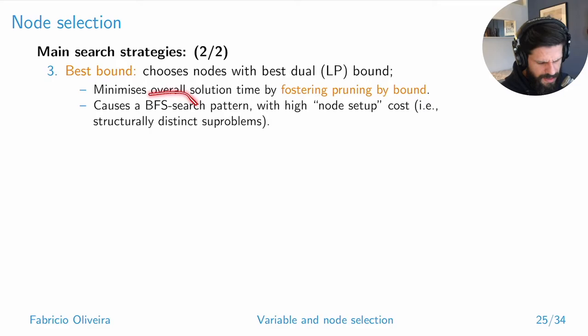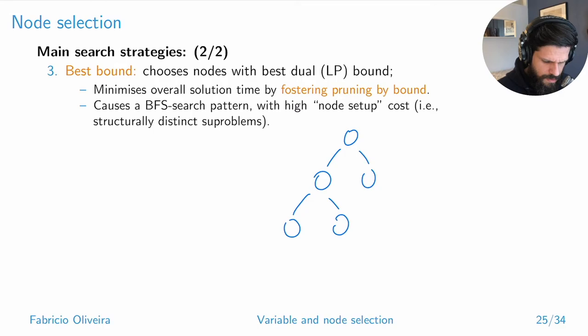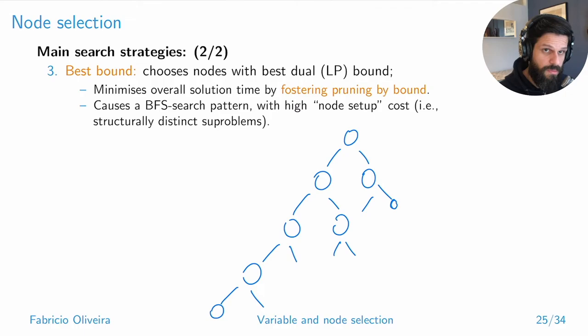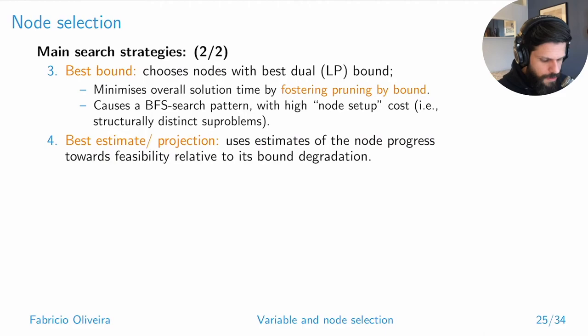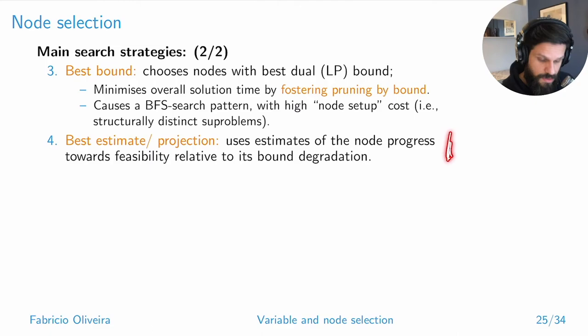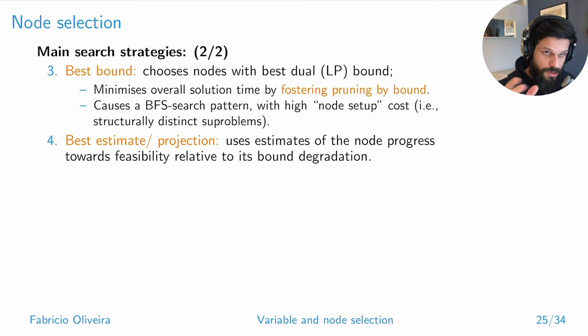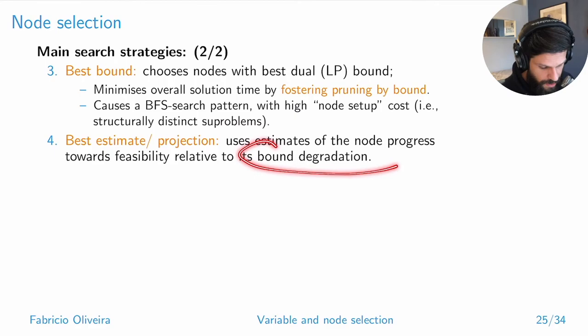When using best bound, you might jump between very different sub-problems, causing significant overhead. Another idea is to use estimates of node progression towards feasibility — similar to pseudo costs — to estimate how much closer you are getting to a feasible solution, and how much the fractional parts of the solution are decreasing, associated with bound degradation.